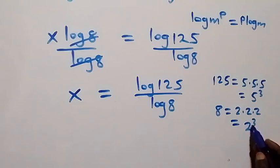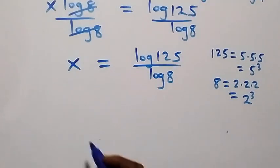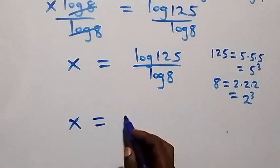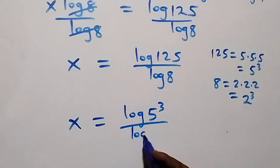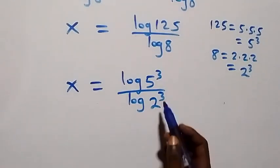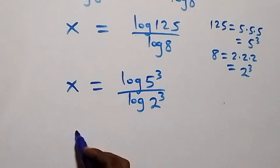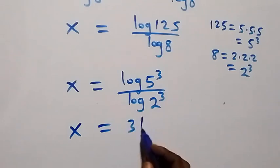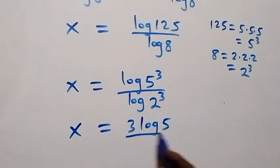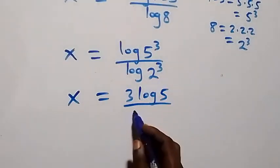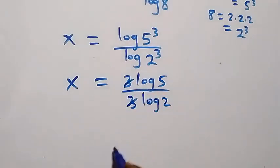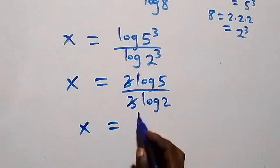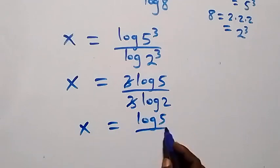So we have x equals log of 5 raised to power 3, over log of 2 raised to power 3. Applying the power rule of logarithms, the 3 comes out front on both sides: x equals 3·log 5 over 3·log 2. The 3s cancel each other, leaving x equals log 5 over log 2.